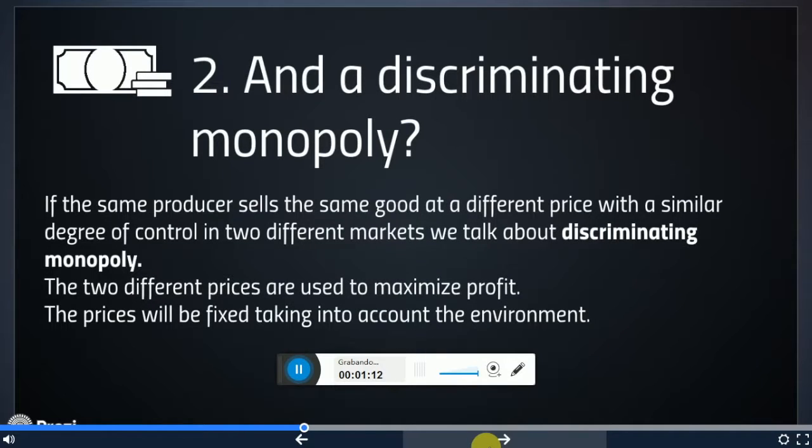If the same producer has a monopolist role in two different markets, there are two markets where the same producer has a monopoly, and he fixes different prices for the same good. We'll be talking about discriminating monopoly.